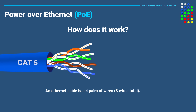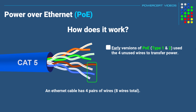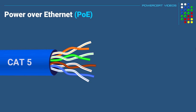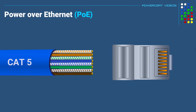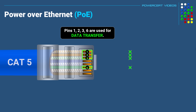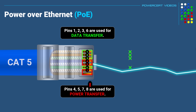In order to supply power to a device, early versions of PoE used the four unused wires to transfer power, while later versions of PoE use all eight wires to transfer power. Here we have a view of a CAT5 ethernet cable and its twisted pair wires. If we straighten out these wires and arrange them to the correct wiring standard, the wires on pins 1, 2, 3, and 6 are used for transmitting data, and the wires on pins 4, 5, 7, and 8 are used for transferring power.